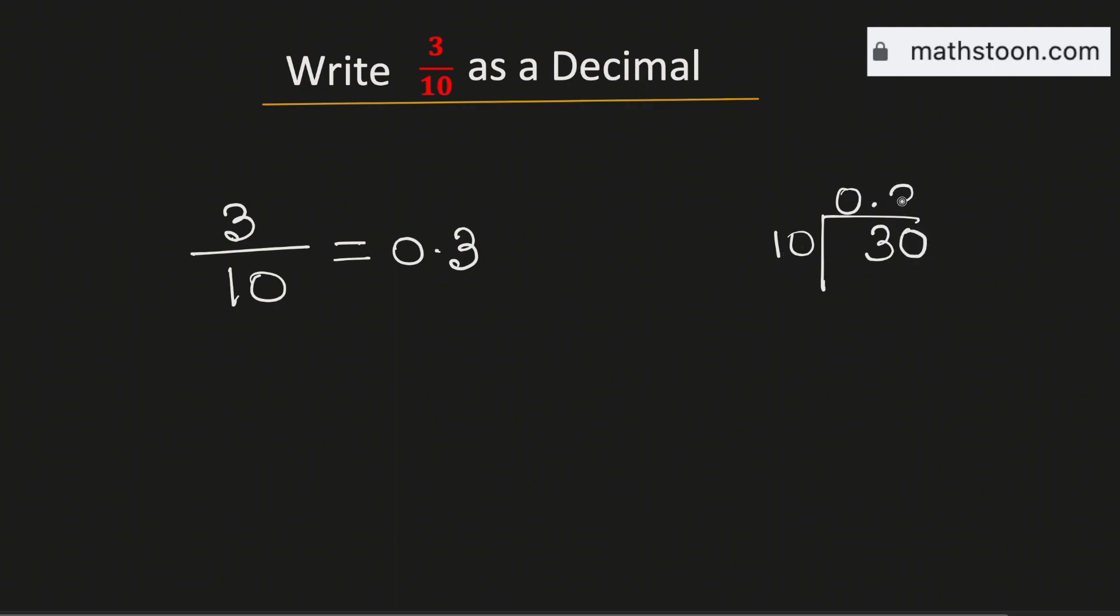Now 3 times 10 is 30. If we subtract we are getting 0.